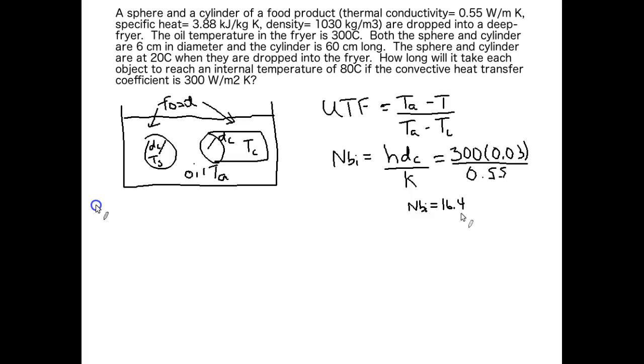We have one of the quantities we need for the Heisler chart, that's our Biot number. The second one we need is the unaccomplished temperature fraction. So let's go ahead and calculate that for this system. It's going to be the same for both shapes because we're trying to get the shapes to the same final temperature. Our unaccomplished temperature fraction is 0.787.